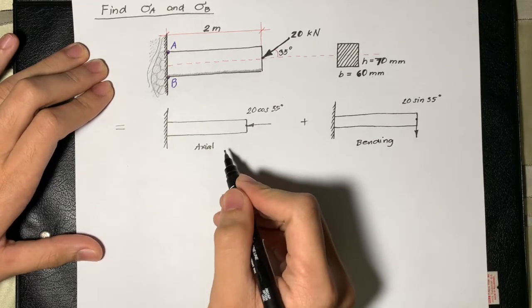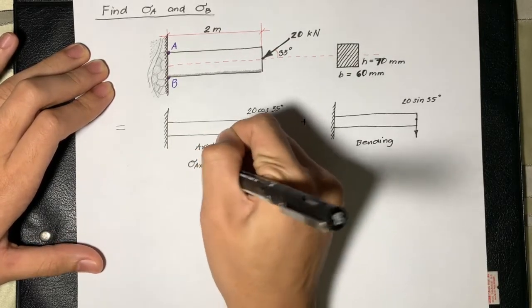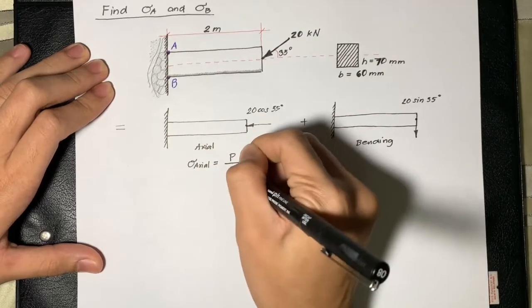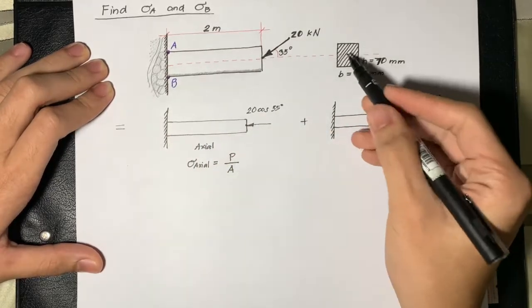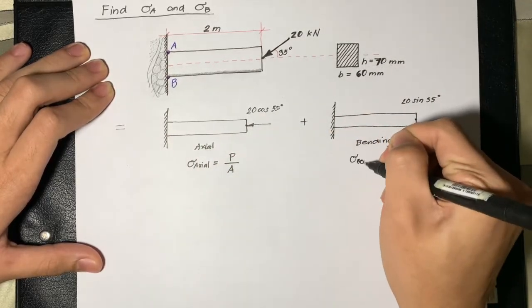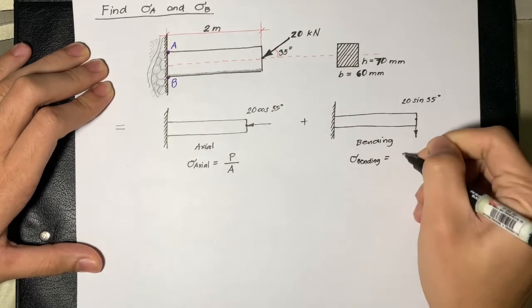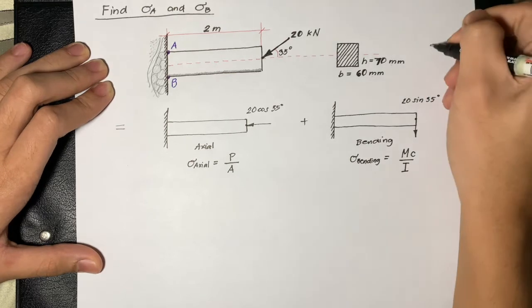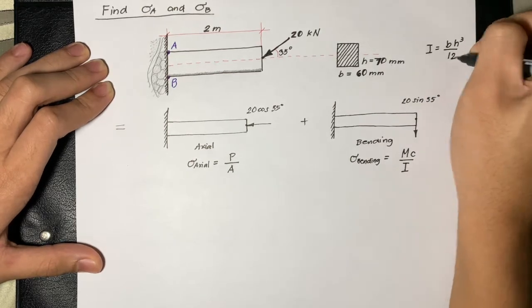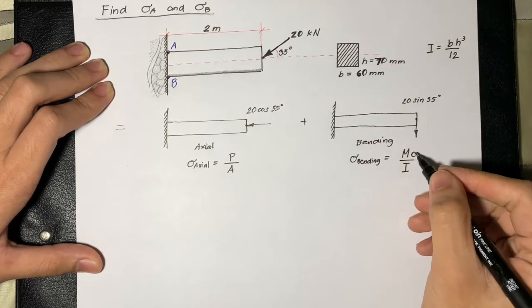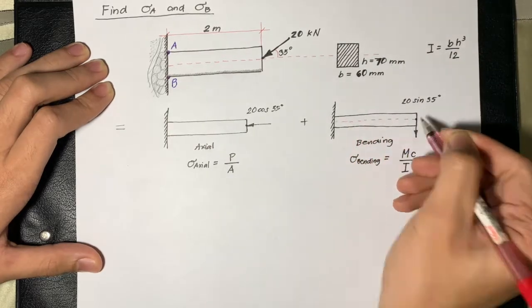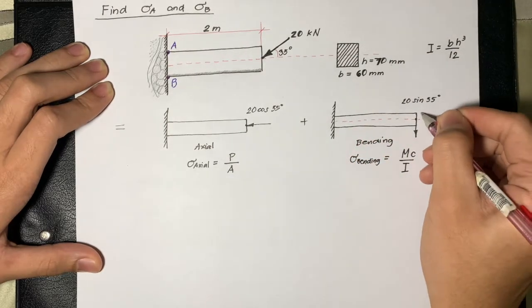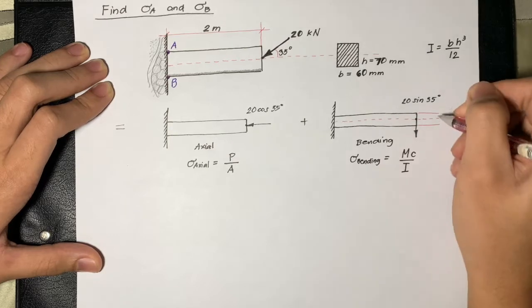The formula for axial stress is force over the cross-sectional area. For bending stress, we have the moment multiplied by C over I, where I is the moment of inertia of the cross-section. The C represents the distance between the neutral axis and the outermost part of the beam.